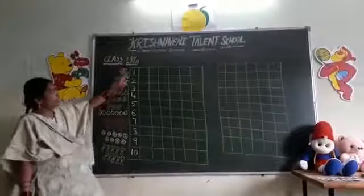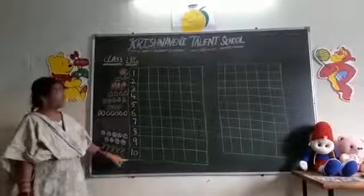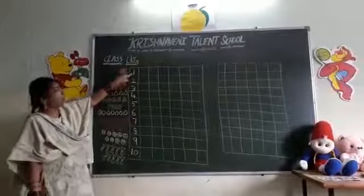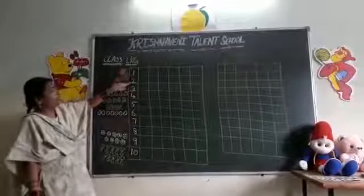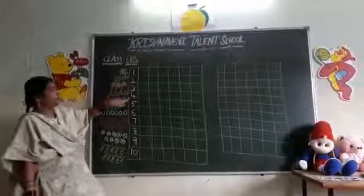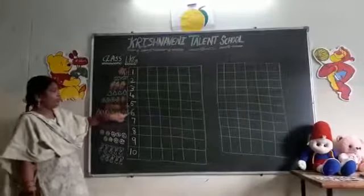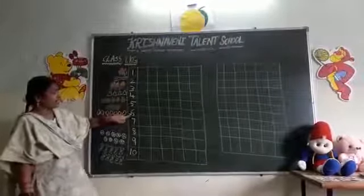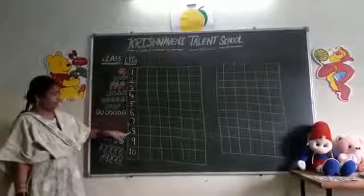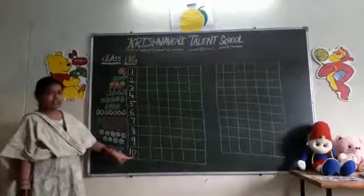So today we learned numbers from 1 to 10. What are these numbers? Say once again, repeat: 1, 2, 3, 4, 5, 6, 7, 8, 9, 10.